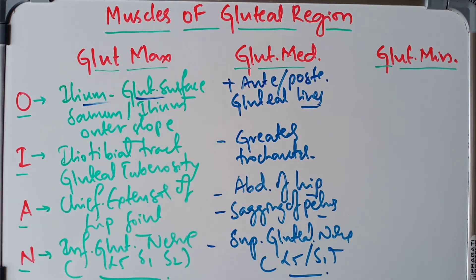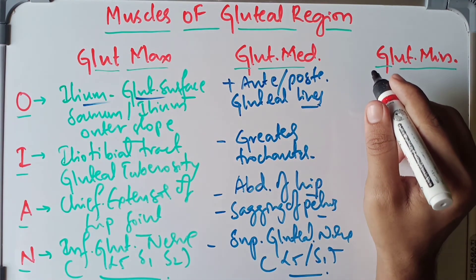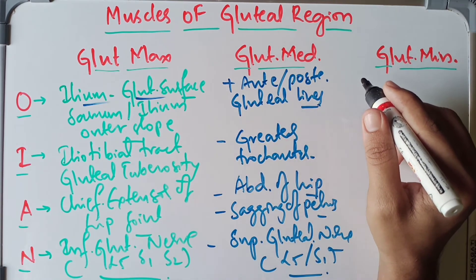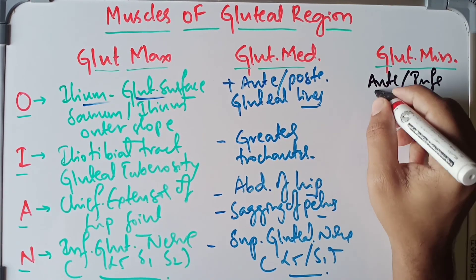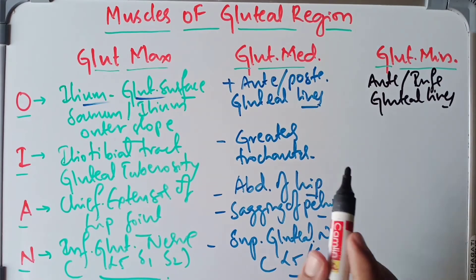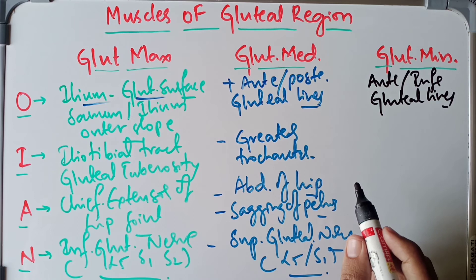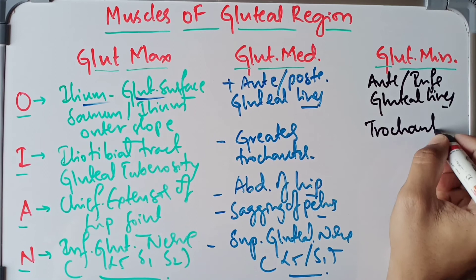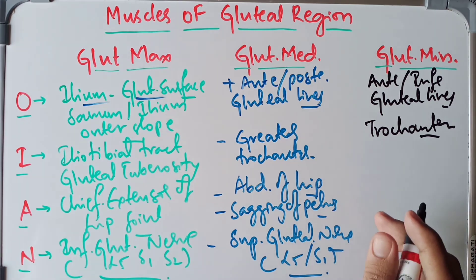The gluteus minimus is also a fan-shaped muscle. Its origin is from the gluteal surface of the ilium, between the anterior and inferior gluteal lines. Its insertion is on the ridge on the anterior surface of the greater trochanter, in relation to the anterior and inferior gluteal lines.